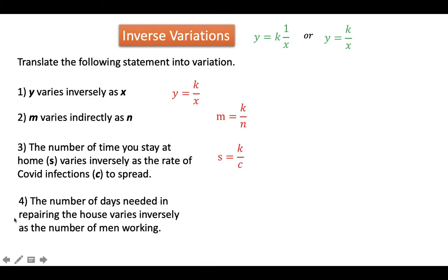Number 4: the number of days needed in repairing the house varies inversely as the number of men working. In this case where a variable is not given, you can think of any letter in the English alphabet except k, because k is used as the constant. So the first quantity is the number of days, the second is the number of men working, giving us d is equal to k over m.